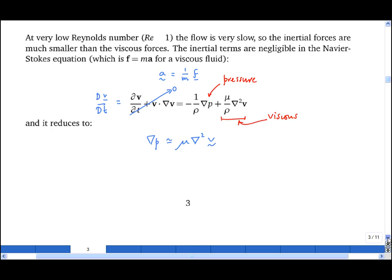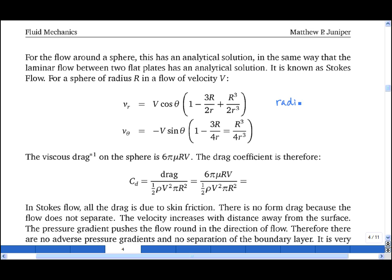This is known as Stokes flow, and the radial velocity is given by this expression, and the azimuthal velocity is given by this expression. One can then integrate the shear stress around the surface of the sphere to find the viscous drag on the sphere. And it has a very simple expression, 6πμrv, where r is the radius of the sphere.